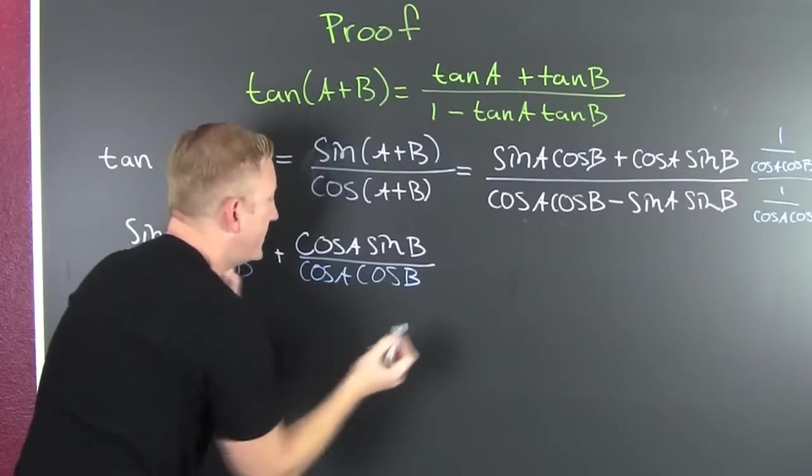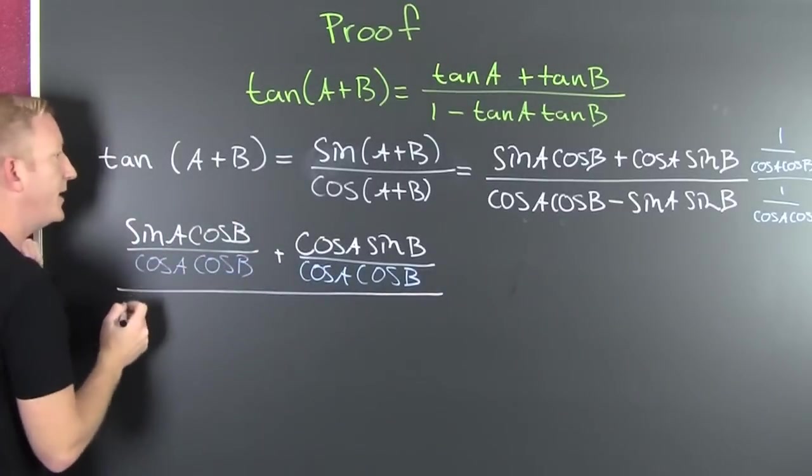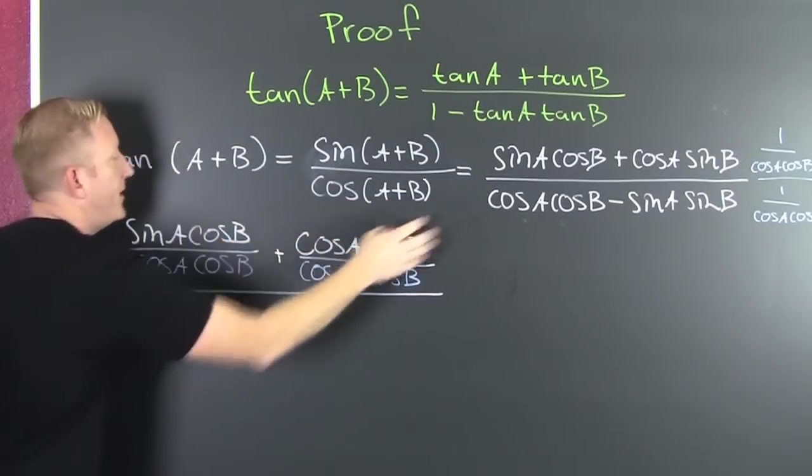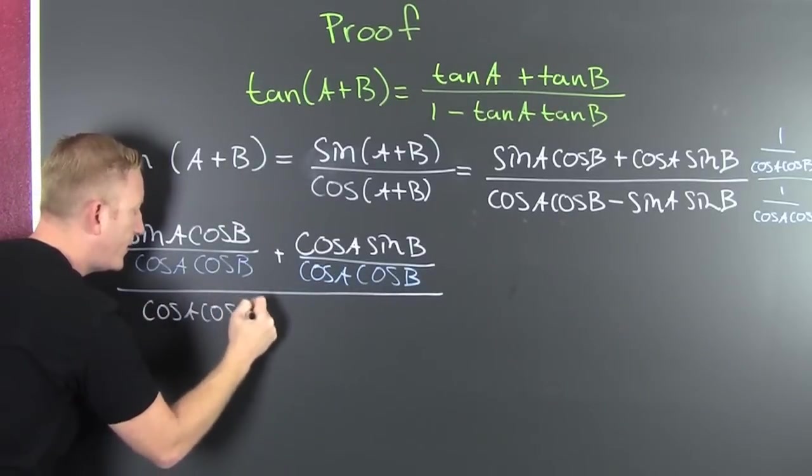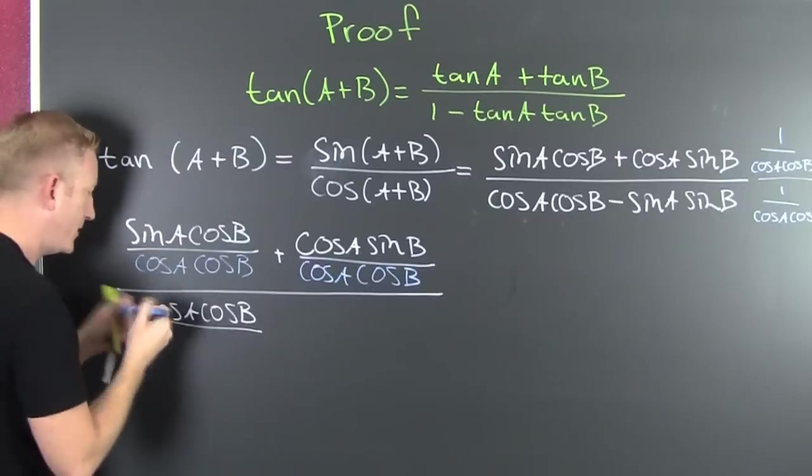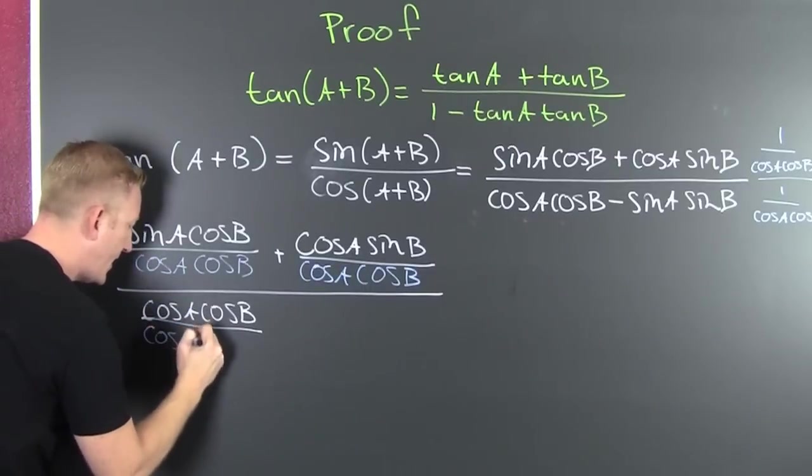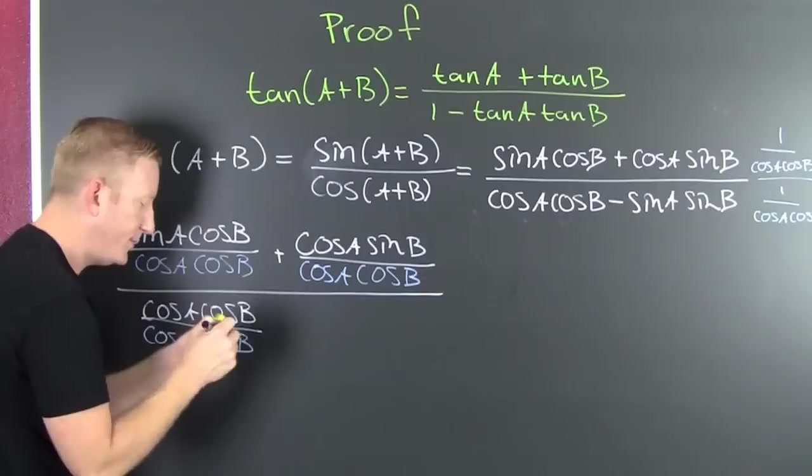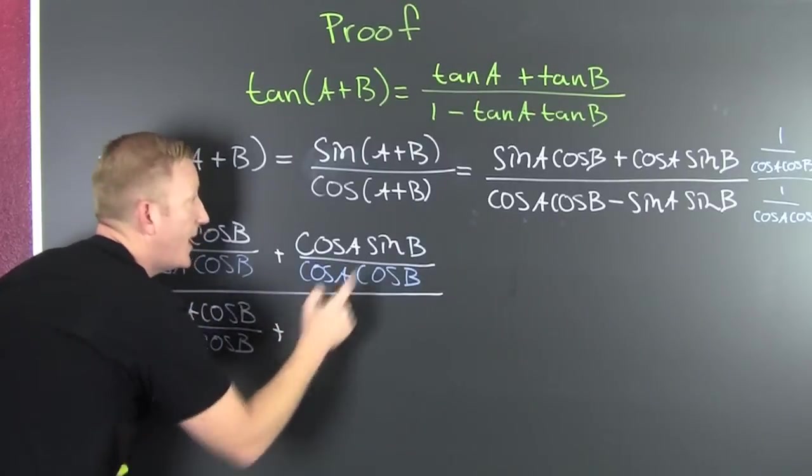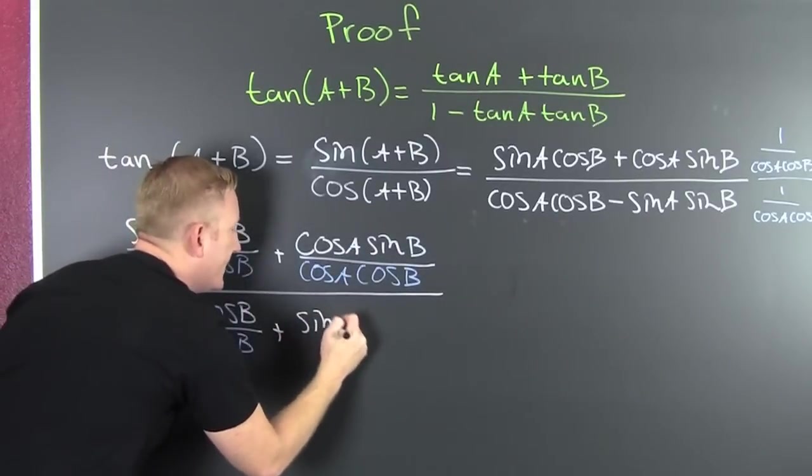And then that's going to be all over this one here. The cosine of A, cosine of B, divided by the cosine of A, the cosine of B. Now we be almost there.